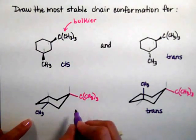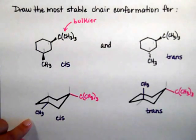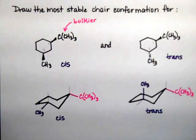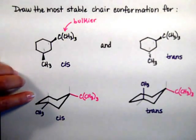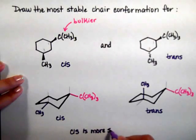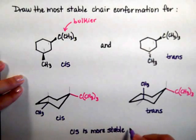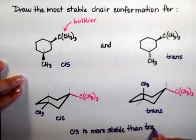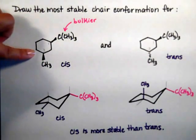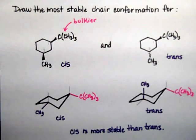This right here is your most stable conformation for the cis, and this is the most stable for the trans. Now, comparing the two: the cis is more stable, because I was able to put both substituents on equatorial positions. So in this particular example, cis is more stable than trans. That doesn't happen for every example — not every case will have cis more stable than trans. As a practice problem, do the same example but put the methyl on carbon number 4, and find the cis and trans conformations to see which one is more stable.